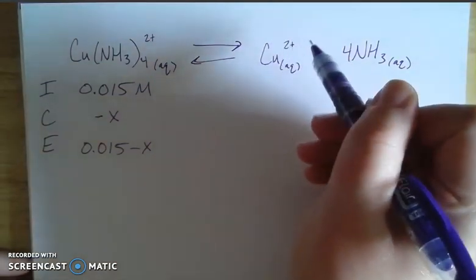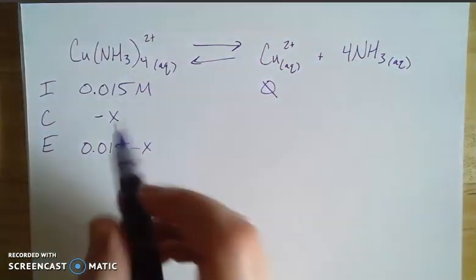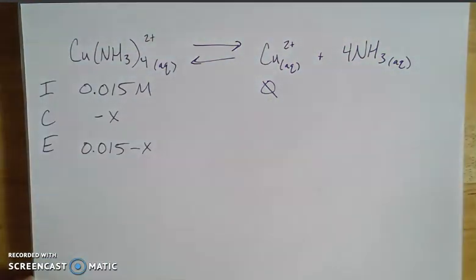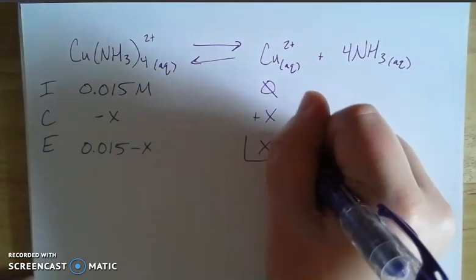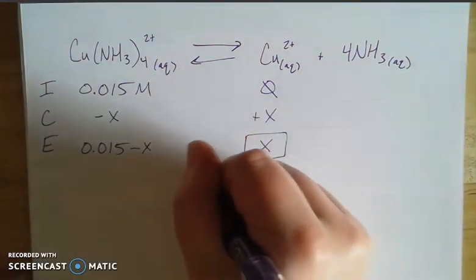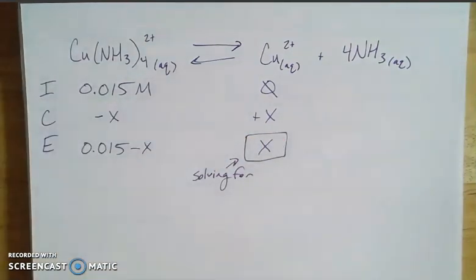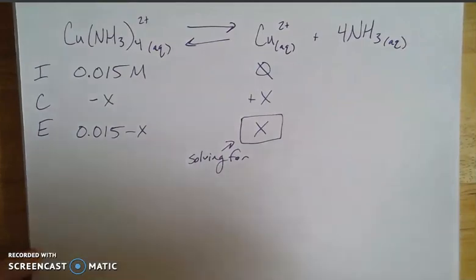Now we used up all of the copper in forming this ion. So initially, once we formed as much of this ion as we can, there's no copper in solution. But once we get into equilibrium, then we'll end up with some amount at equilibrium. And this X is really what we're solving for, because this is what's going to answer the question of what is the concentration of free copper ions that are left in solution. It's going to be the end of my ICE box here.